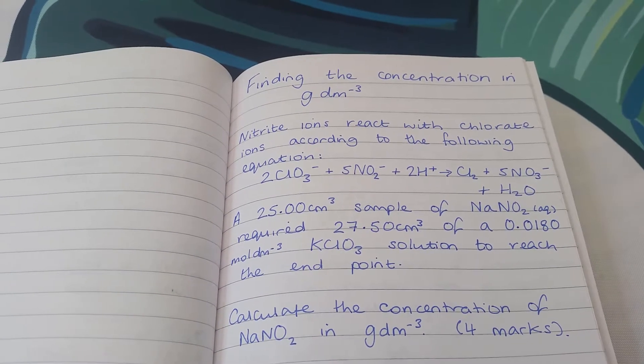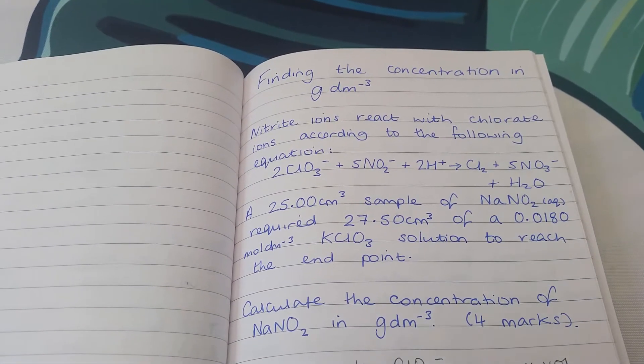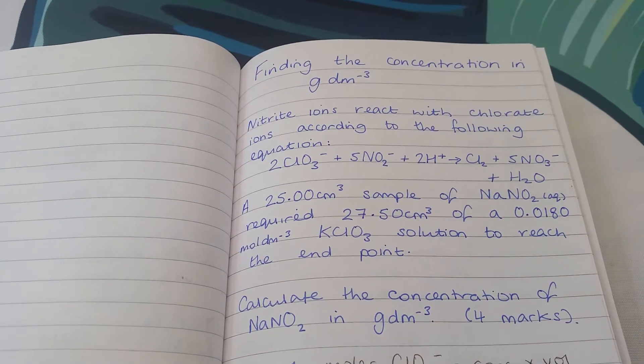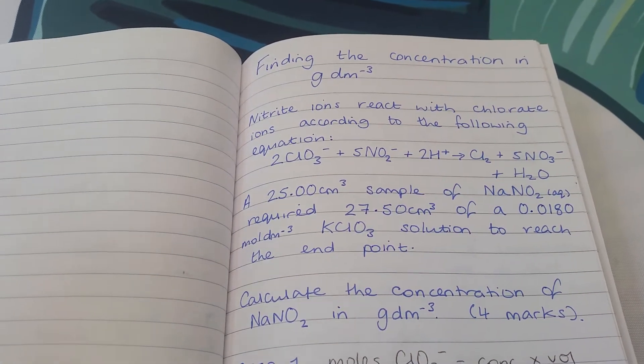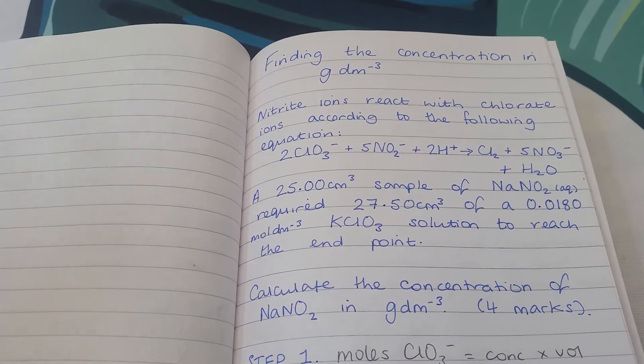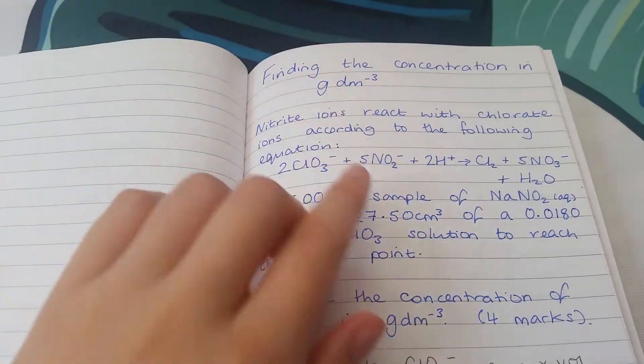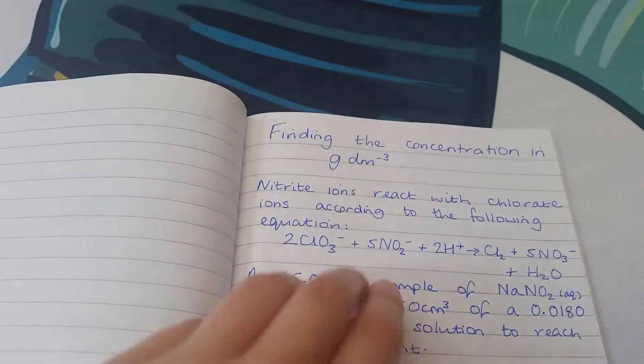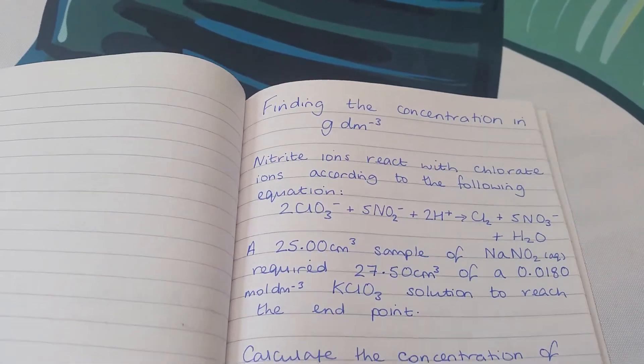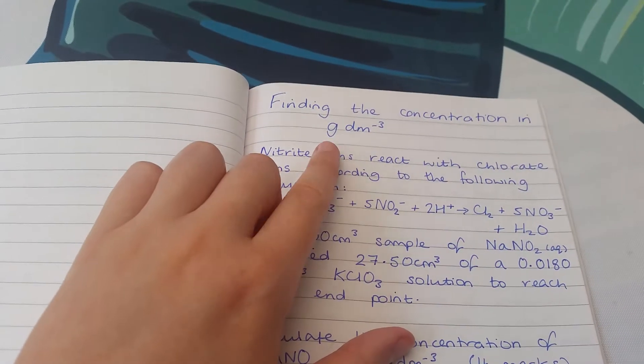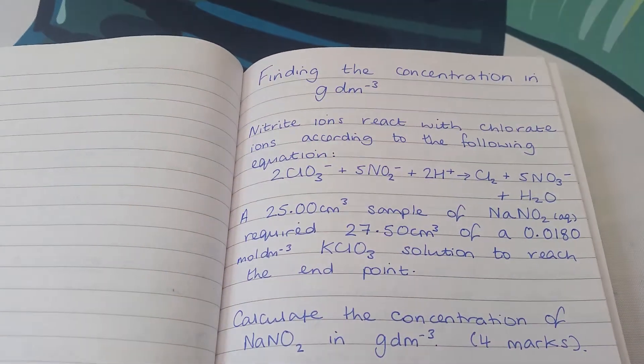Hi guys, this video talks through a worked example calculation where we are finding the concentration of a solution in a titration, and we want the concentration in units of grams per decimetre cubed. This is a unit of concentration just like moles per decimetre cubed, but you might see this one used less frequently.